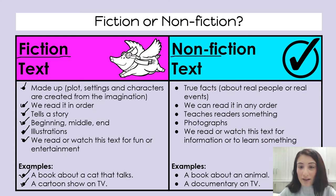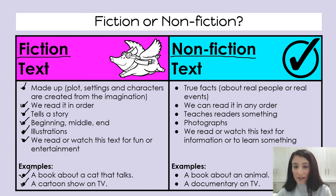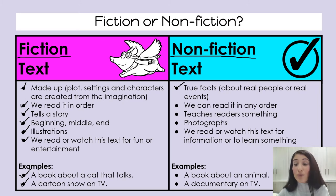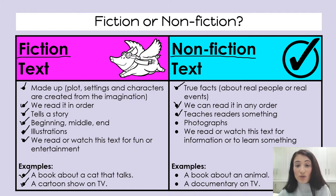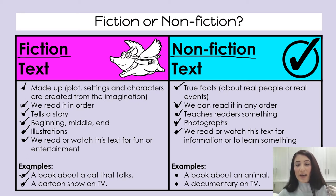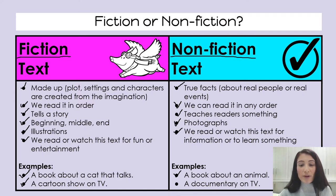Now let's go over to non-fiction text. A non-fiction text is about true facts that might be about real people or real events that really happened. We can read it in any order. It might teach us something new. It might have photographs of real things inside it. We might read or watch it for information or to learn something. Examples of a non-fiction text are a book about a real animal — like elephants, giraffes or monkeys — or a documentary on TV about something that happened in real life.